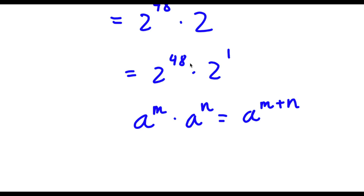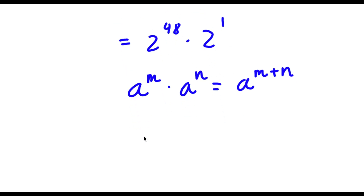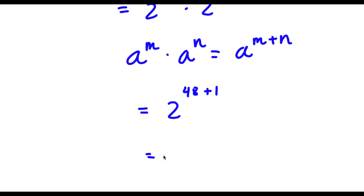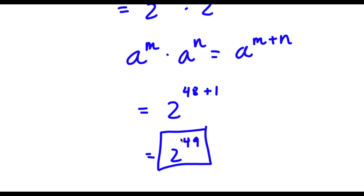So 2 to the power of 48 times 2 to the power of 1 equals 2 to the power of 48 plus 1, which is 2 to the power of 49. So this is my answer.